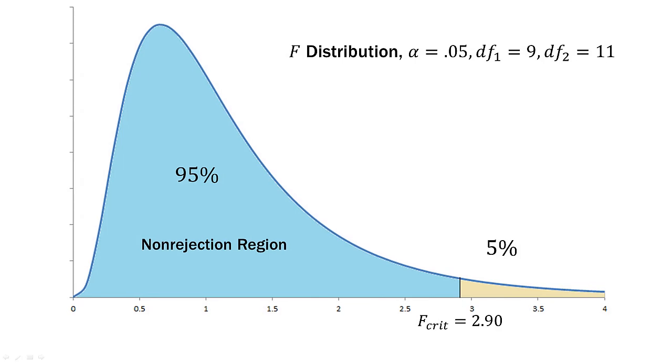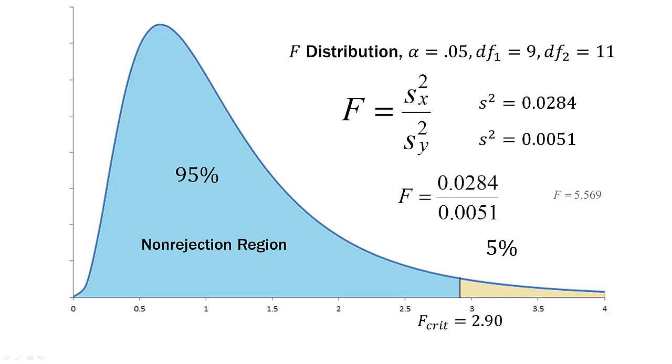So now we need to find our F ratio statistic. So here is our formula. And remember, our variances were 0.0284 and 0.0051. So all we do is divide them. And we end up with an F statistic of 5.569.